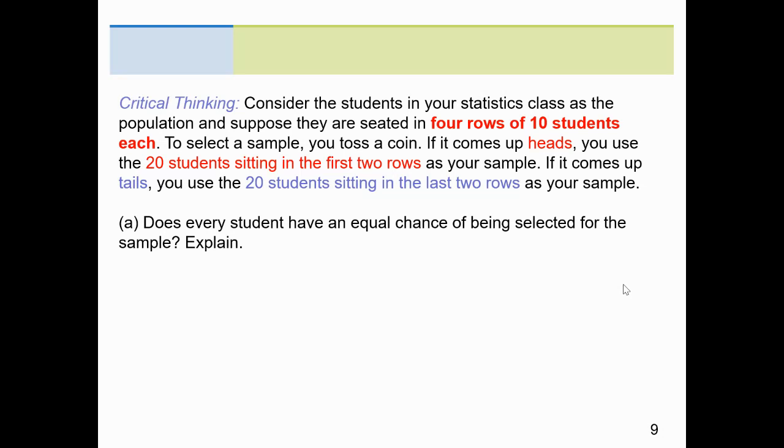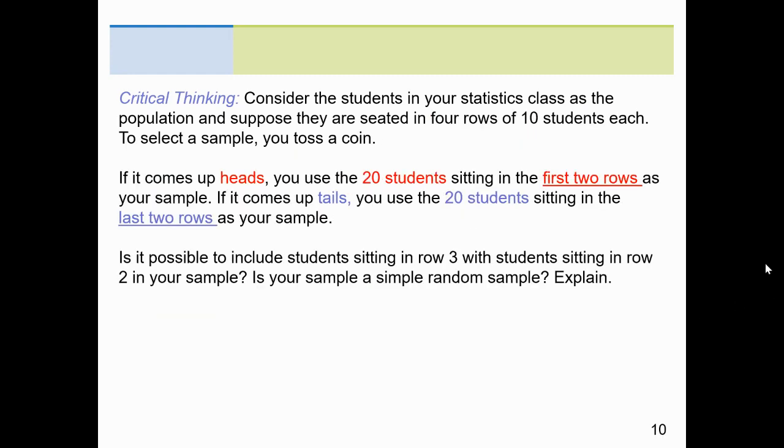All right, this whole idea of every sample size having the same probability, all right, the same chance. Consider this example. Consider the students in my stats class. Let's assume that we were in class and there were 40 students, four rows of 10 students each. To select a sample, I flip a coin. Comes up heads. I choose 20 students that sit in the first two rows, 10 in the first, 10 in the second. Comes up tails. I choose the 20 students that are in the last two rows. Now, the question is, does every student have an equal chance of being selected? Oh, yeah, 50-50 shot.